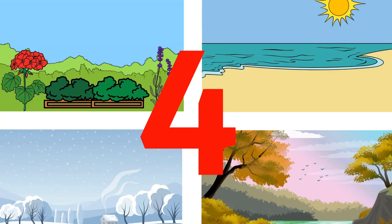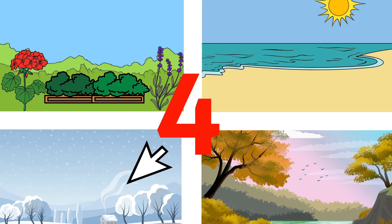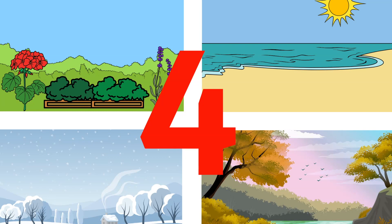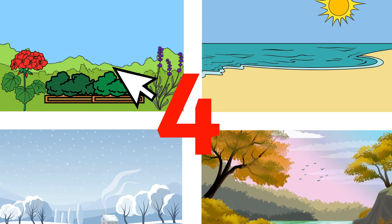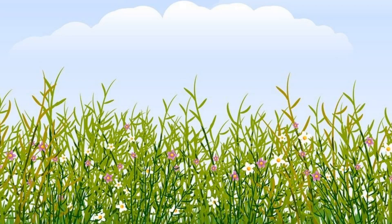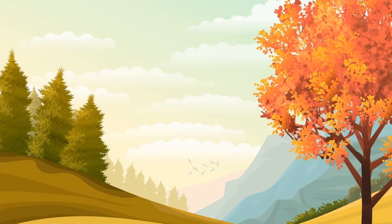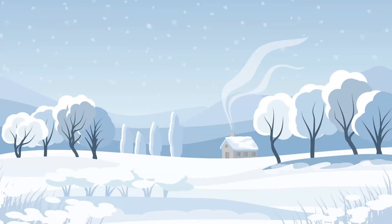Let's sing a season song! Four seasons, there are four seasons — Spring, Summer, Fall, and Winter too. Four seasons, there are four seasons — Spring, Summer, Fall, and Winter too. Spring is the time when the days are warm. Summer is the time when the days are hot. Fall is the time when the days are cool. Winter is the time when the days are cold.